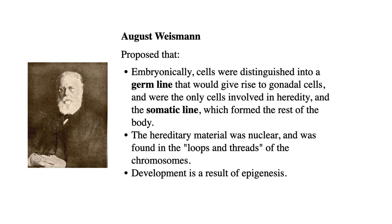His proposal — directly contrary to what Charles Darwin proposed — is that there's no crossing the streams: somatic cells cannot contribute to heredity. He postulated Weismann's barrier, which said somatic cells do not contribute to the next generation. Contrast that with Darwin's gemmule hypothesis: he said cells everywhere contribute something that migrates to the gonads, where they assemble into a mini embryo ready for fertilization, and development is largely a process of growth. Weismann said no, that doesn't happen.